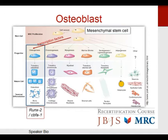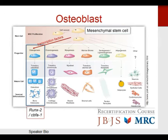Calcitonin is secreted by the C cells of the thyroid gland. It inhibits osteoclast number and activity. Increased serum calcium leads to increased calcitonin secretion, osteoclast inhibition, and ultimately decreased serum calcium. Parathyroid hormone is secreted by the chief cells of the parathyroid gland. It stimulates osteoblasts to secrete interleukins to activate osteoclasts — importantly, osteoclasts have no PTH receptors. The net effect of PTH is to increase serum calcium and decrease serum phosphate. Mnemonic: calcitonin and osteoprotegerin keep the bone in.